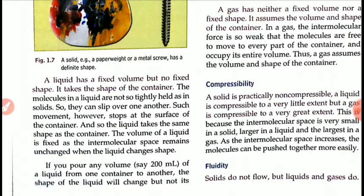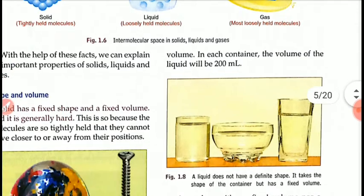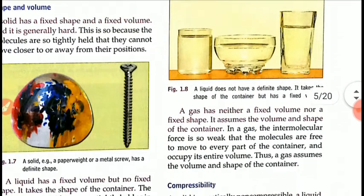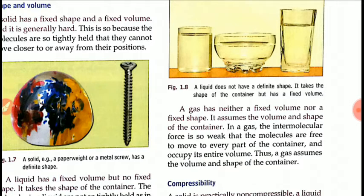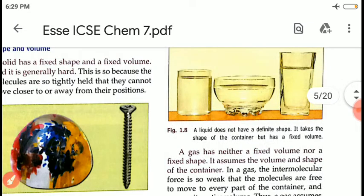The volume of a liquid is fixed as the intermolecular space remains unchanged when the liquid changes shape. For example, if we take 200 milliliters of liquid and pour it from one container to another, the shape will change but the volume — 200 milliliters — remains the same. You can see in the diagram that only the shape is changing but the volume stays the same.